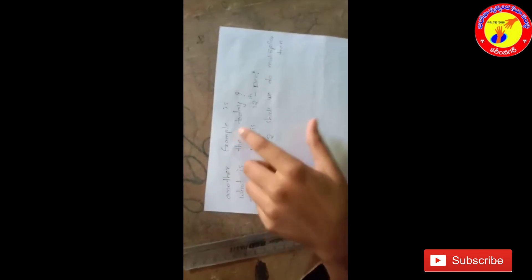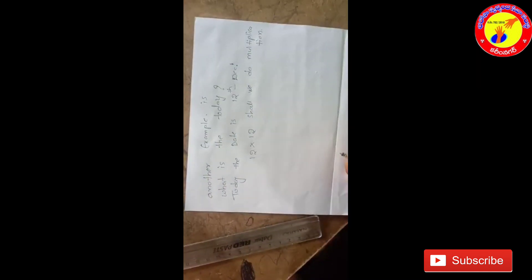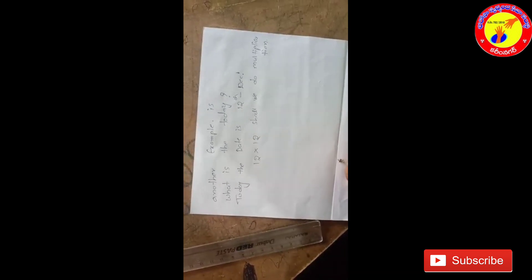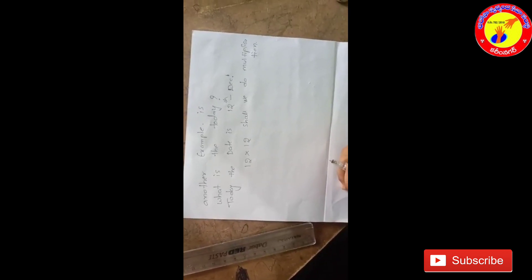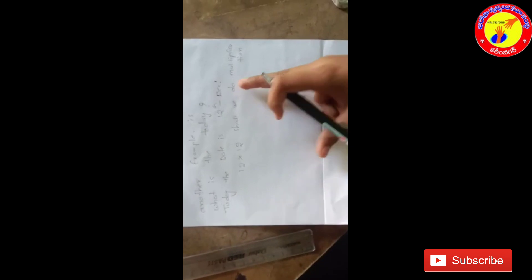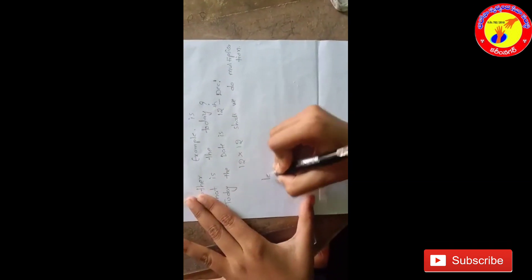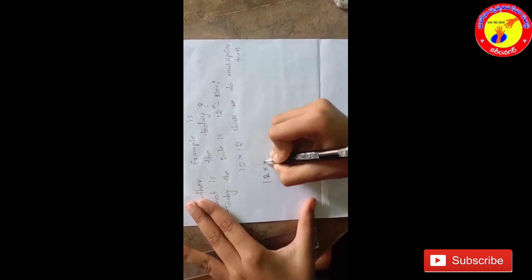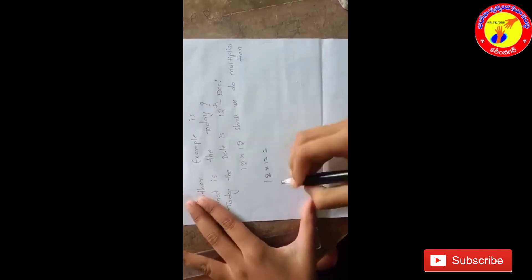Next, another example. What is the date today? Today the date is 12th December. 12 into 12. Shall we do multiplication? Next, let's see. 12 into 12 is equal to.